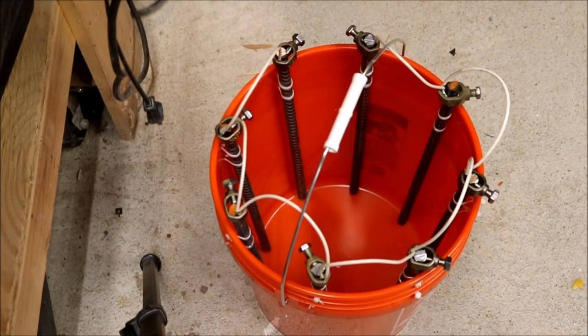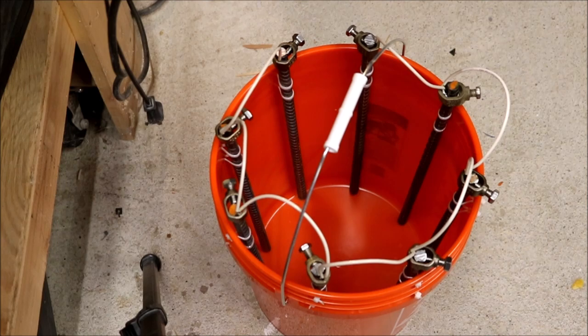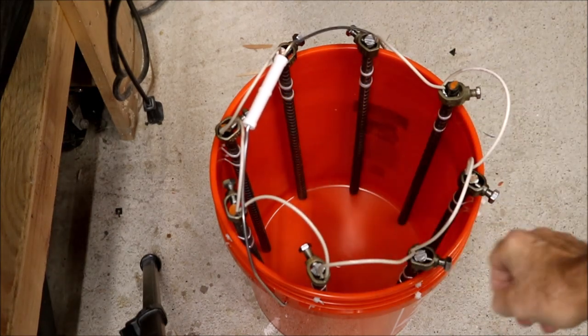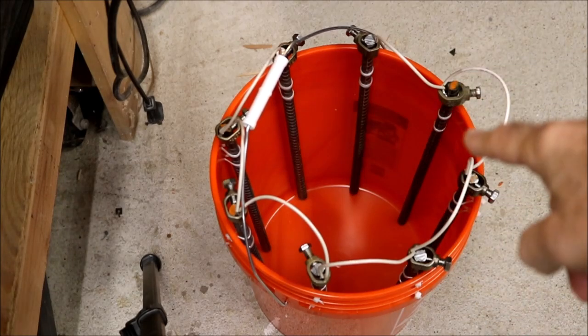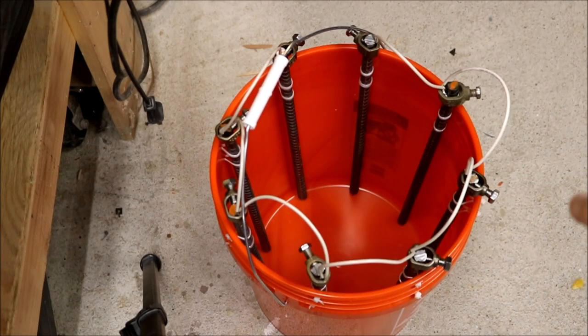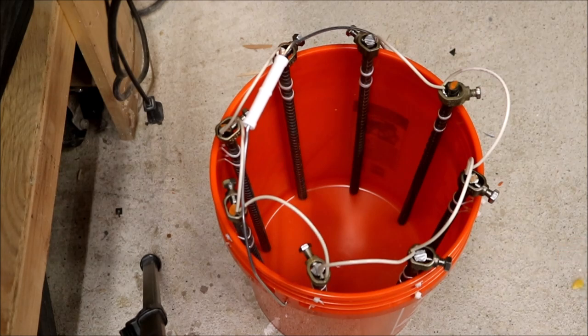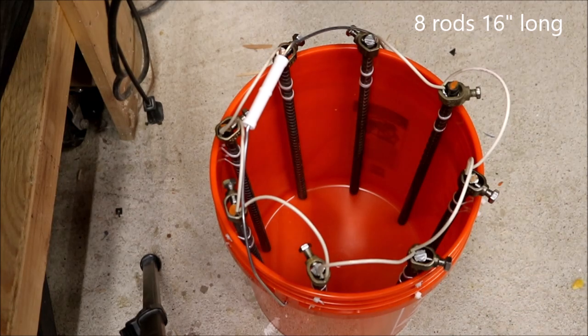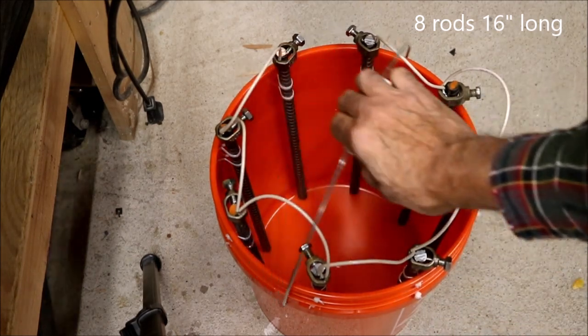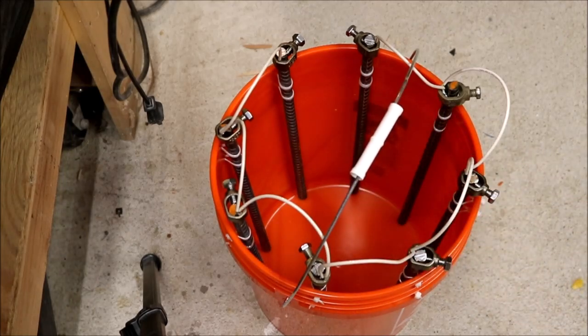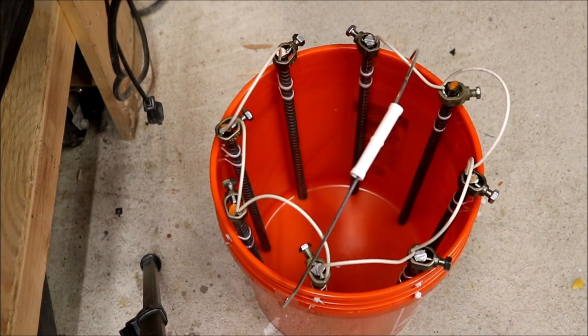This is a five gallon bucket I put together and you can see here that I have iron re-rod around the edges. It's held to the bucket by tie wraps and it's connected. Each one's connected with an acorn connector right here and number 12 wire to every one of them. This will make it much easier to fill and empty the solution.